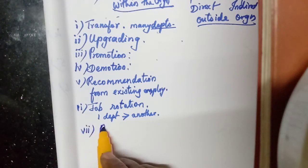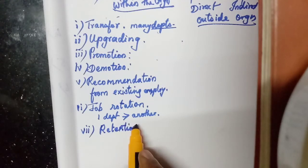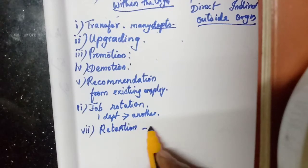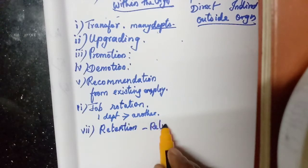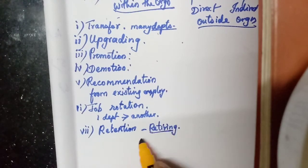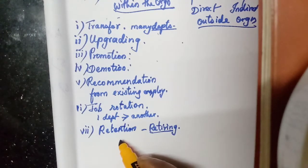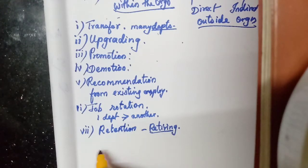Then, retention. Sometimes the retiring employees will not be sent outside — they will be retained in the same organization, maybe after their retirement. By seeing their good performance, management may not allow them to go. Again, they will be called back and retained in the same organization. That is called retention.